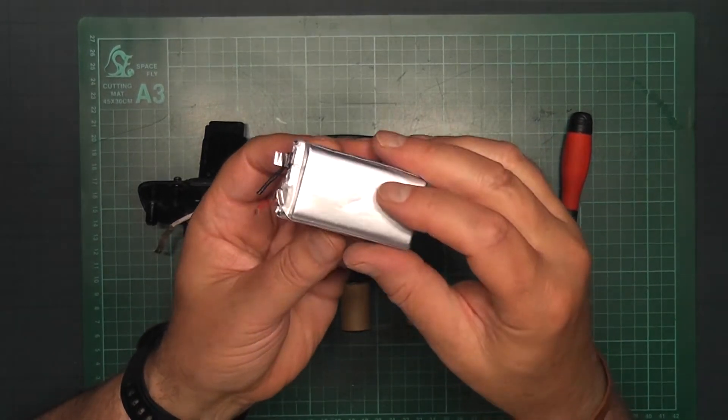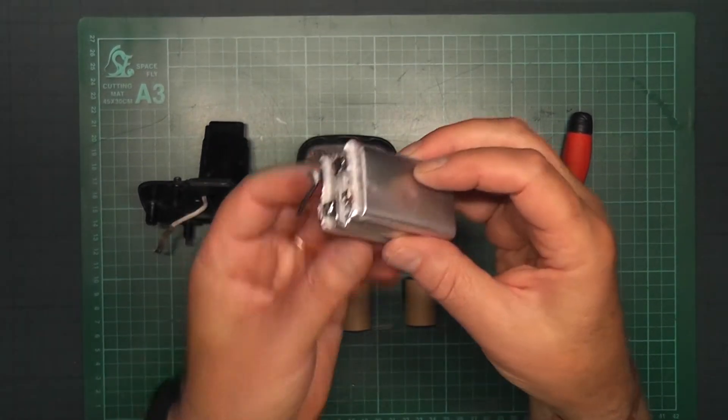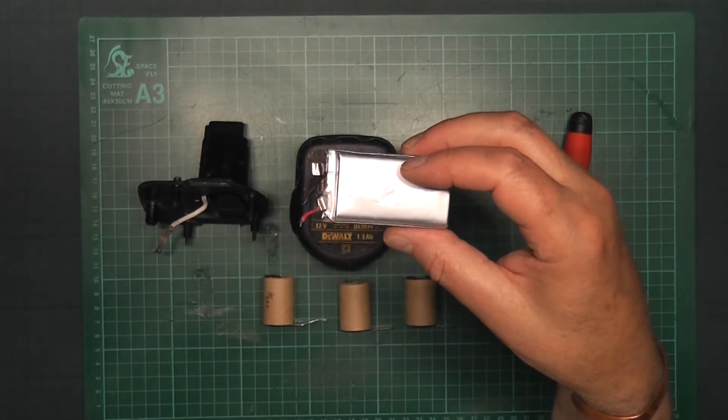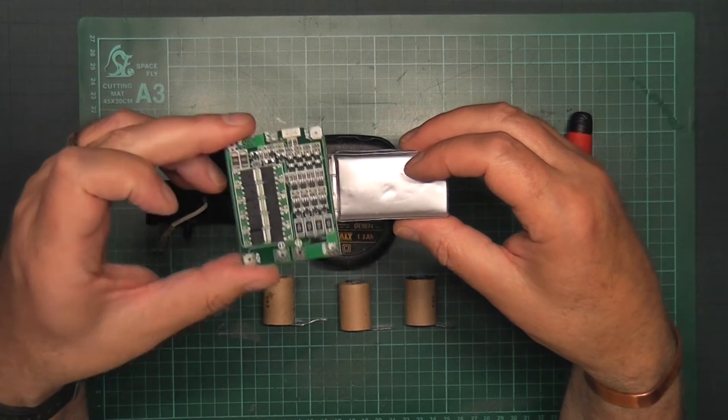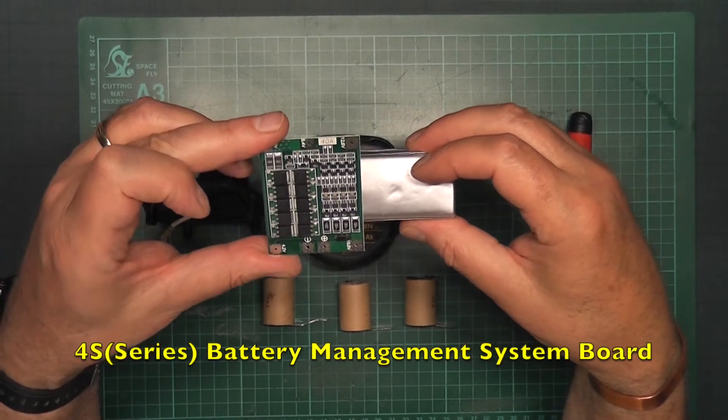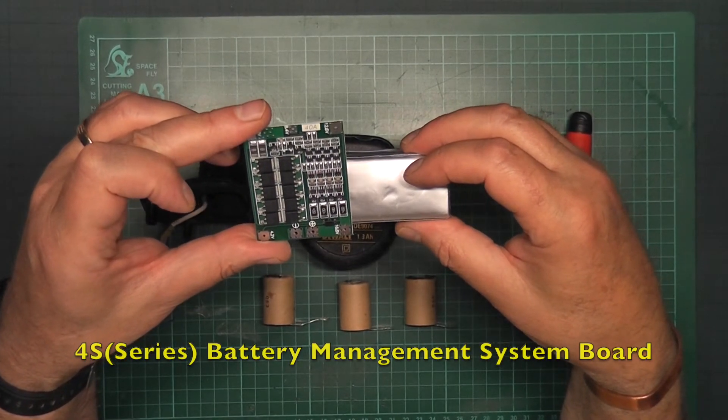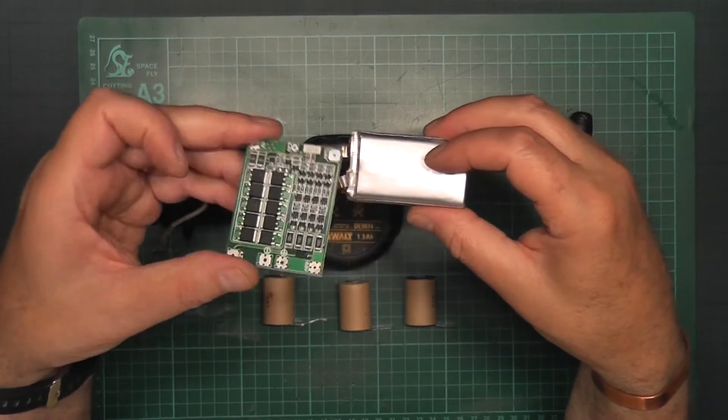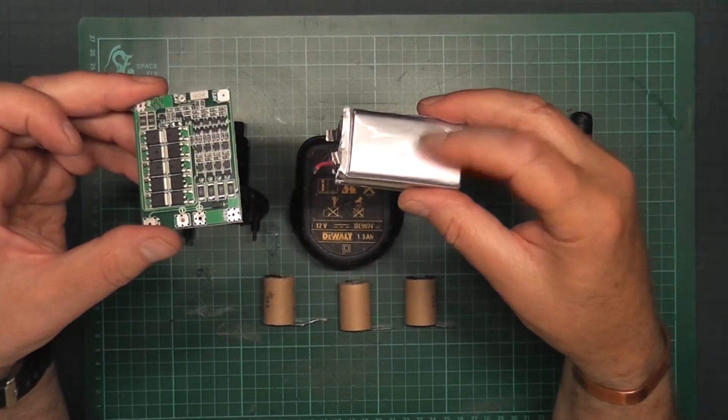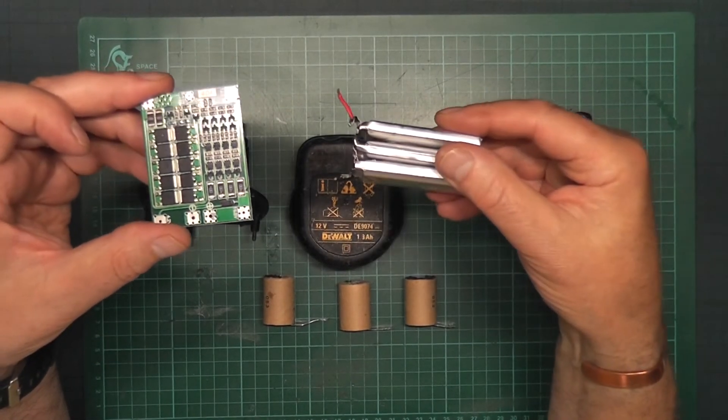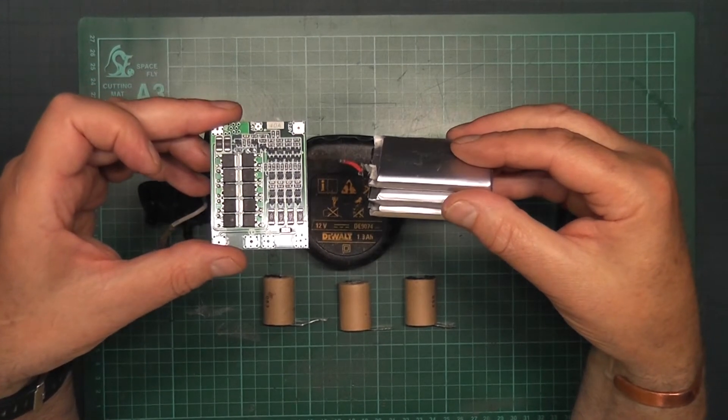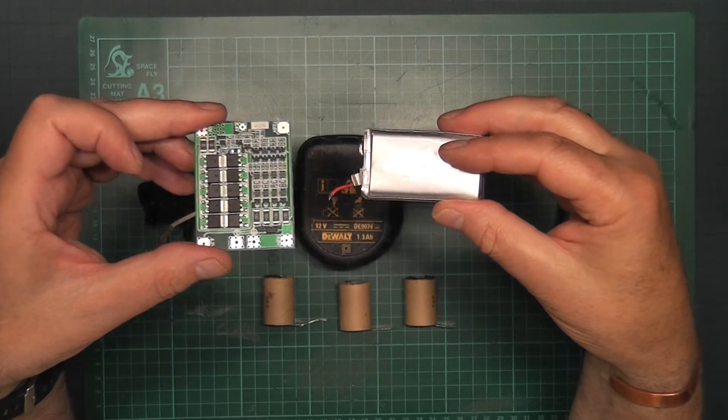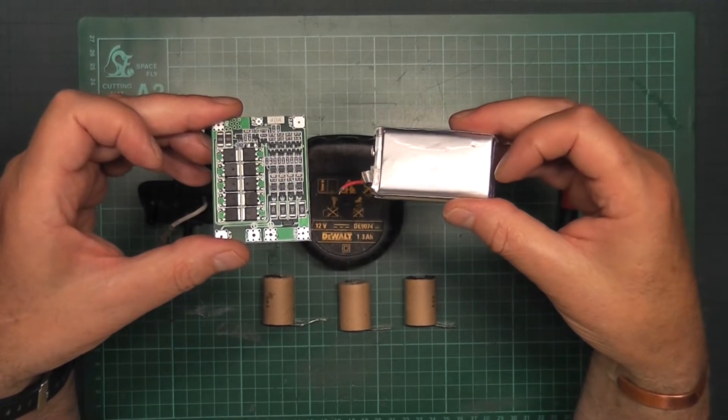So what I'm going to do is incorporate it here with this. Now this is a 4S, but I can use 3S off it. So when it's charging, the BMS board will put an equal voltage into each of the three batteries. So we'll go ahead and wire this up and then we'll install it and see if the drill works.